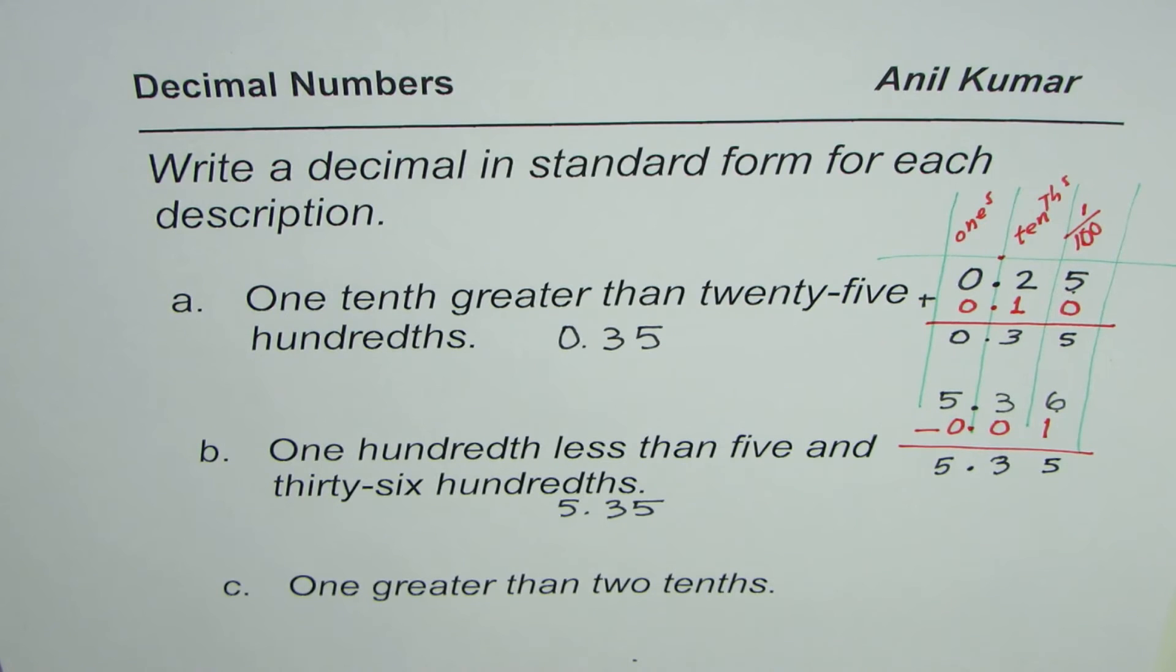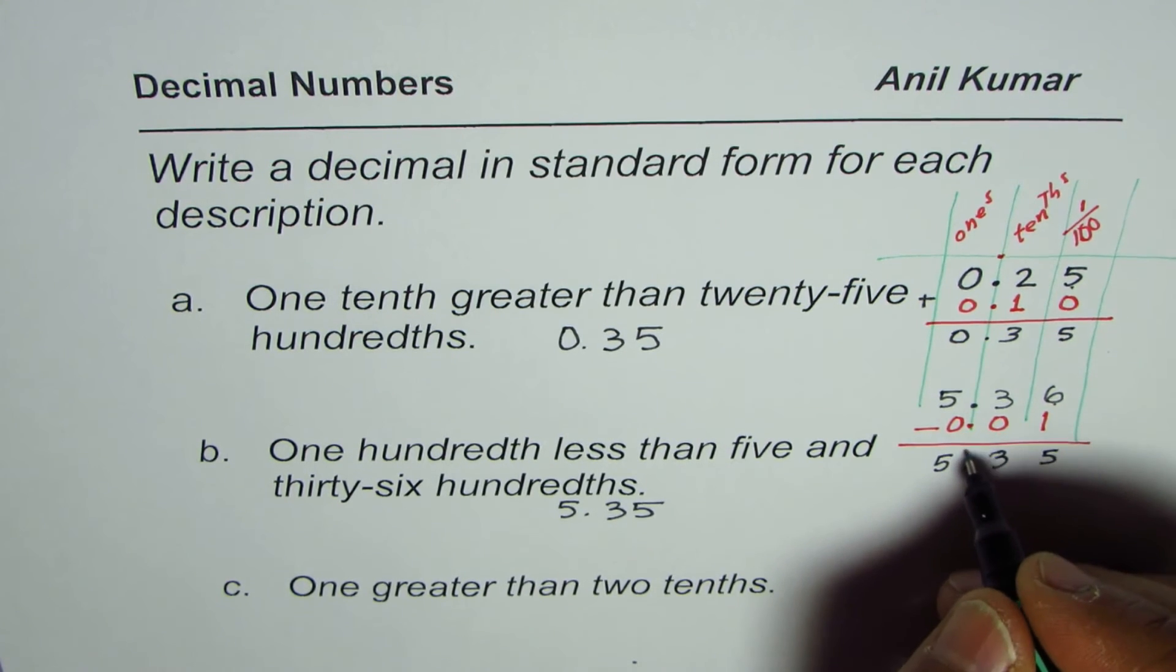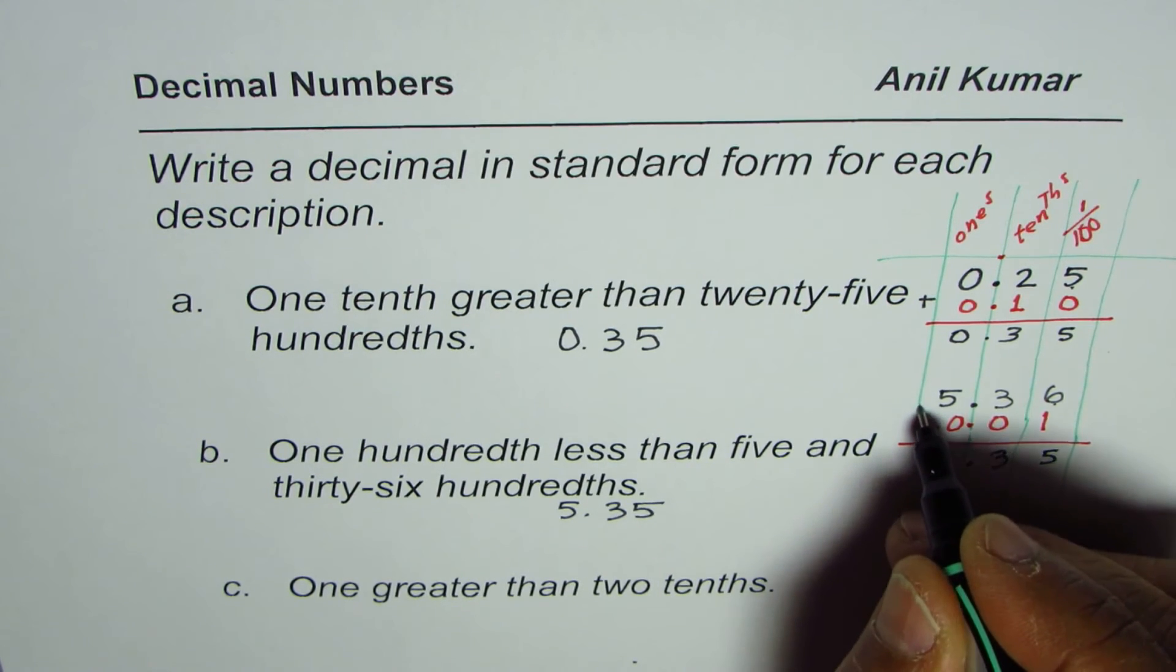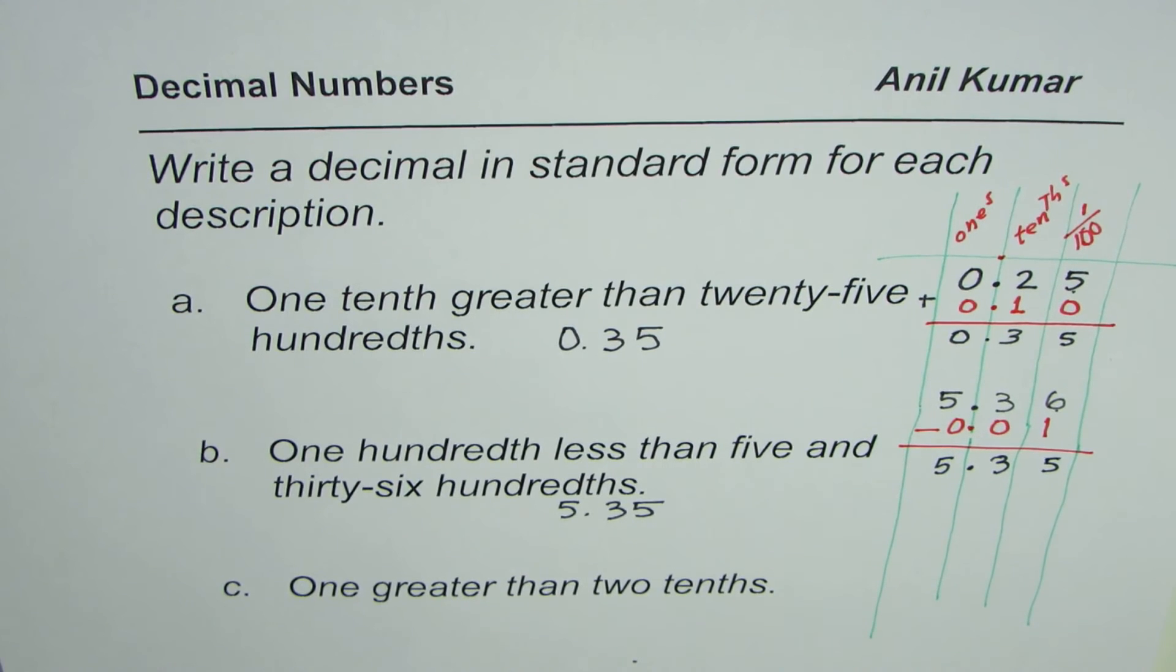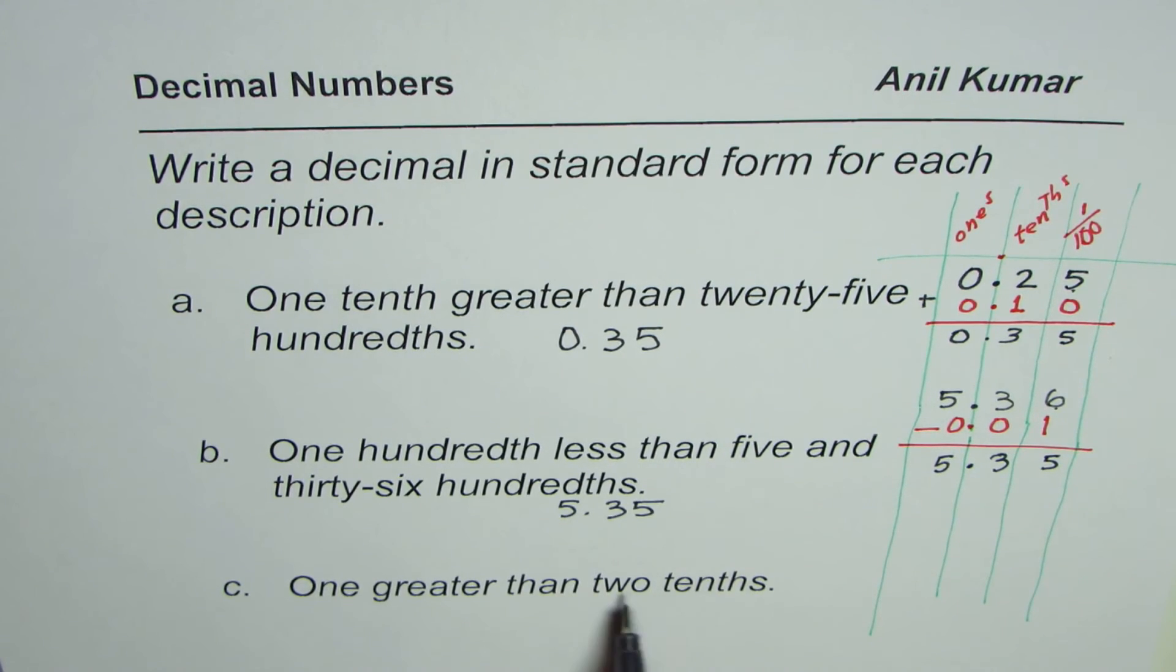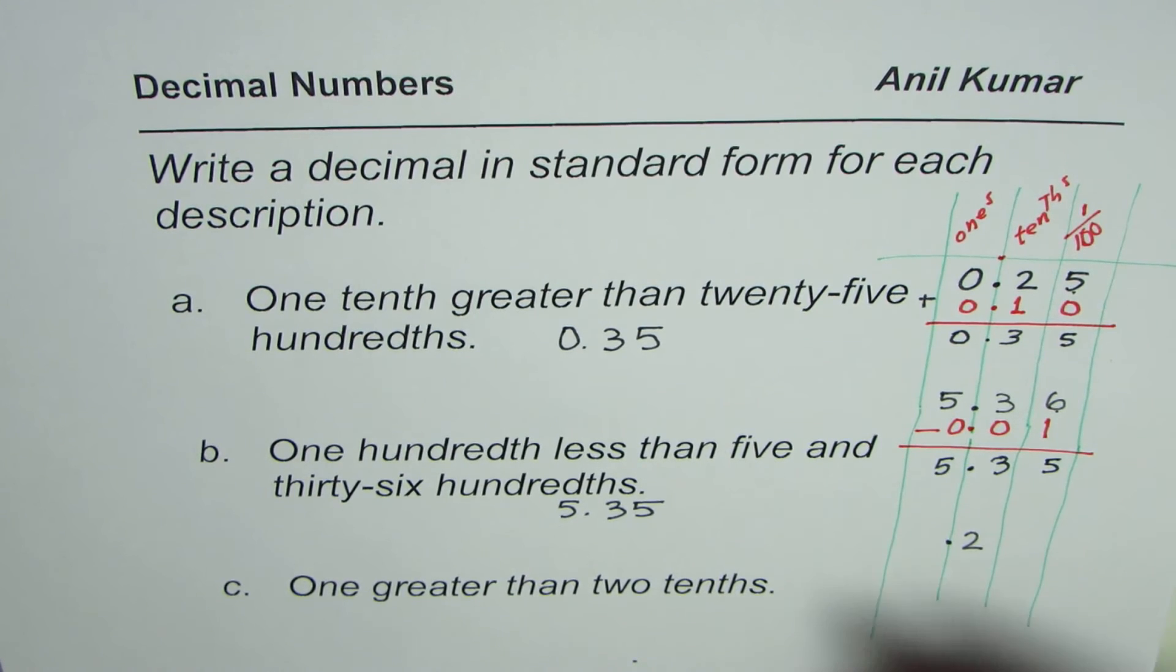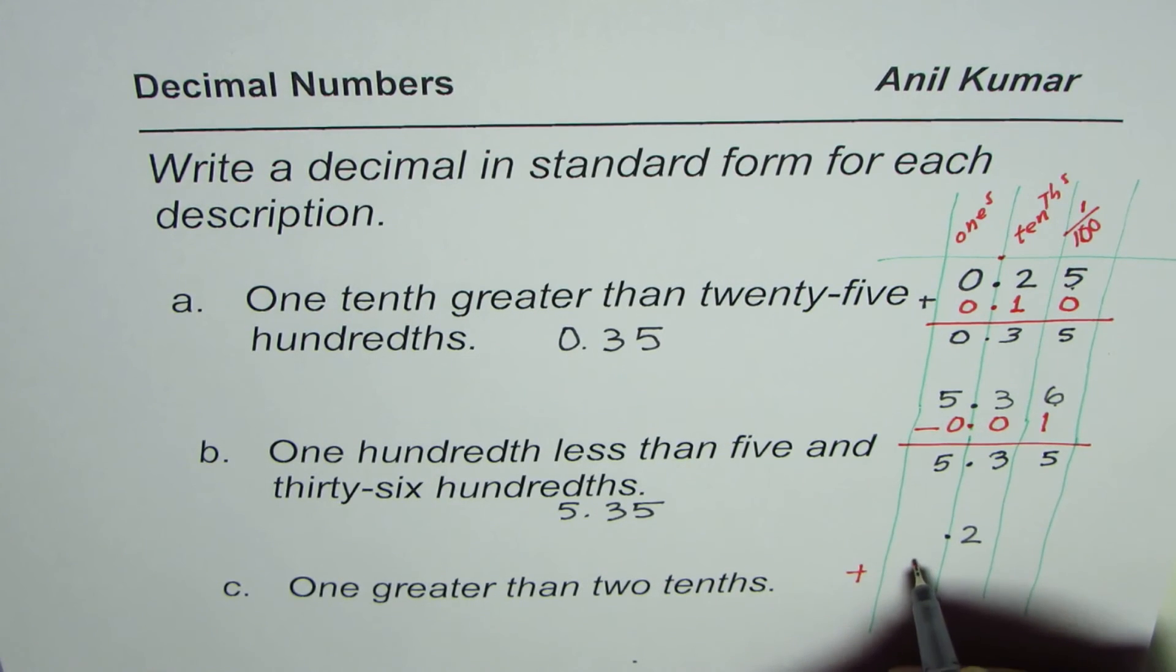The last one here is one greater than two-tenths. Let us extend this place value chart here. Two-tenths means a number which has two in the tenths place. One greater than means we have to add one to this. That means 1.0.